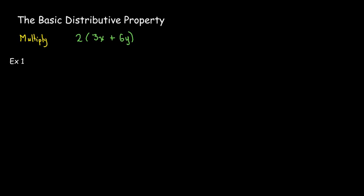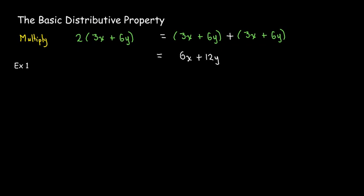We can look at this in the simplest way of thinking about multiplication. This would mean I would have 2 groups of 3x plus 6y, and I would add them together. And when I add them together, I can just collect like terms, and I'll get 6x plus 12y.